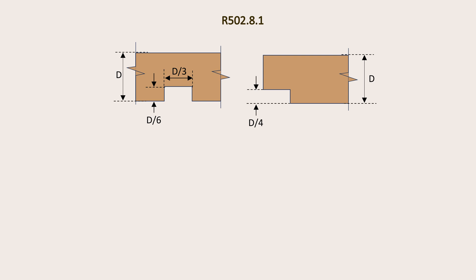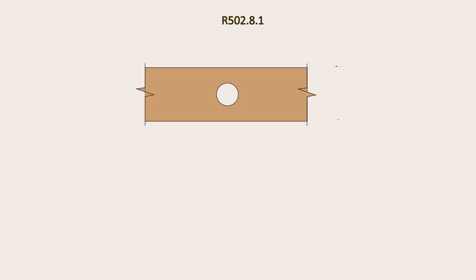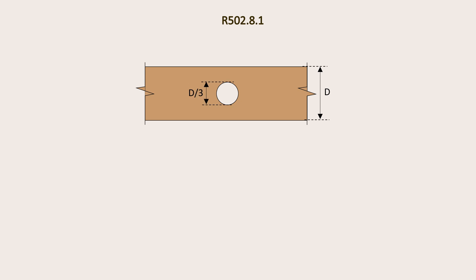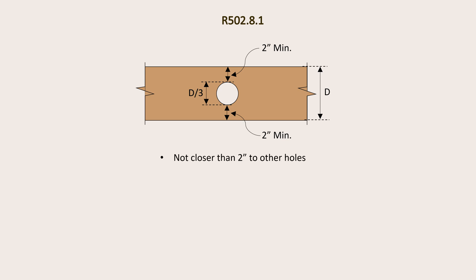The limitations or guidelines on holes are also provided in Section R-502.8.1. First, the size of the hole should not exceed one-third of the beam or joist depth. Additionally, the distance from the edge of the hole to the top or bottom surface of the member should not be less than two inches. The same section also specifies that holes should not be closer than two inches to any other hole or closer than two inches to notches on the same member.